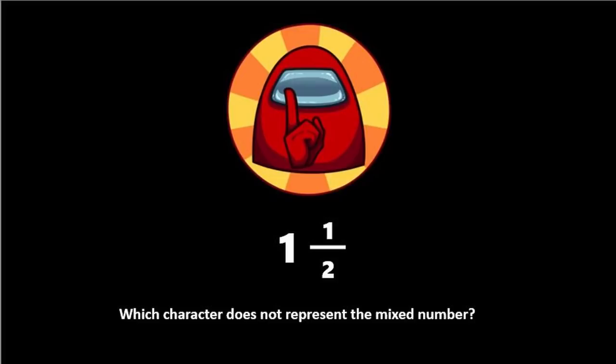And the idea is that we identify the impostor character. So which character does not represent the mixed number?